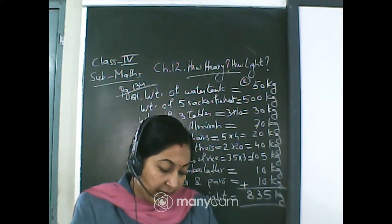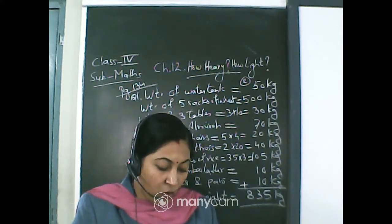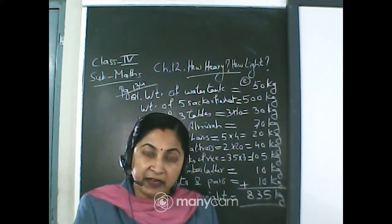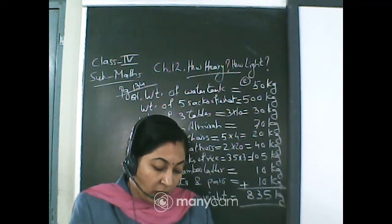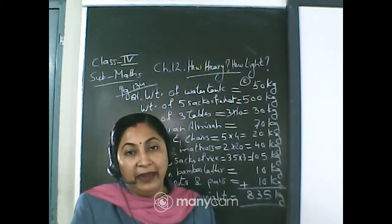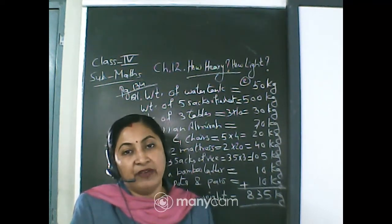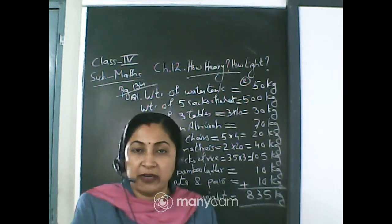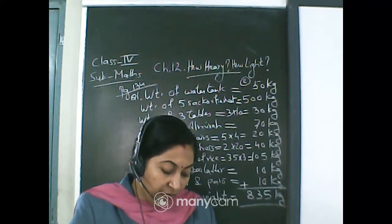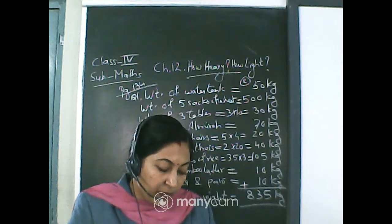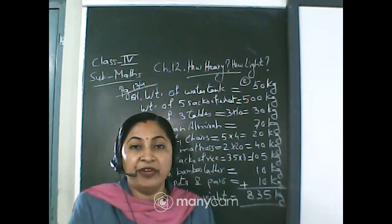So the total weight loaded on the cart is 835 kg. They decided to remove a few things from the cart — 835 minus 700 is 135 kg extra, and this 135 kg is to be removed. The question is: which things should be removed so that the weight of the load is not more than 700 kg?